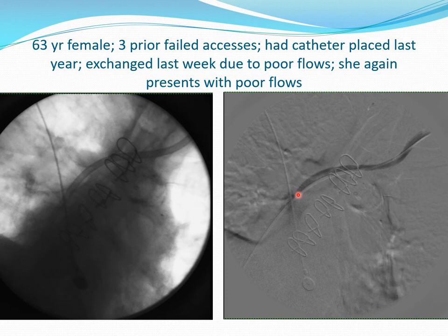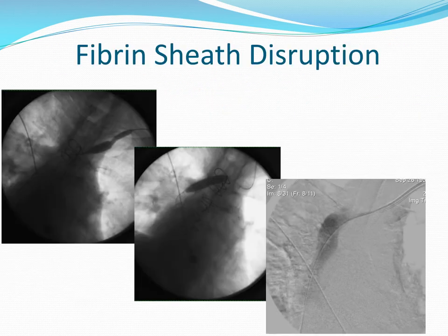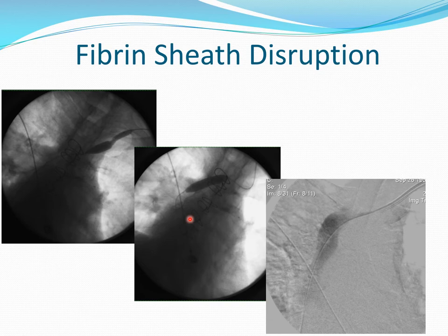The fibrin sheath is made of fibrin material that develops around the catheter. When there is a significant amount of fibrin material, when the machine aspirates blood from the red port, the membrane is pulled into the holes and prevents proper flow. What we can do is disrupt this fibrin sheath by advancing a balloon over a wire, inflating the balloon, and running the balloon up and down a few times to disrupt the sheath. After that, you place a new catheter and inject contrast again — in this case, you can see good filling of the brachiocephalic vein and SVC.